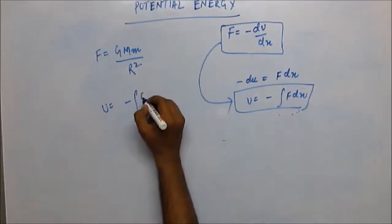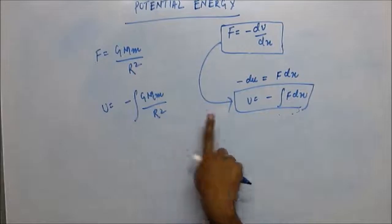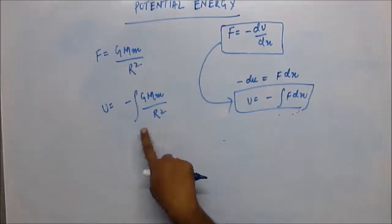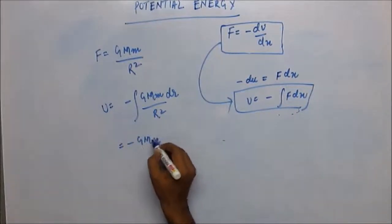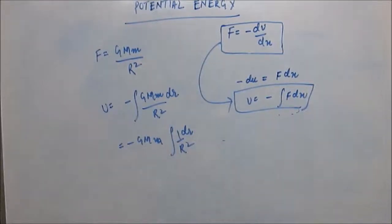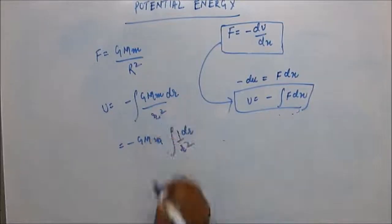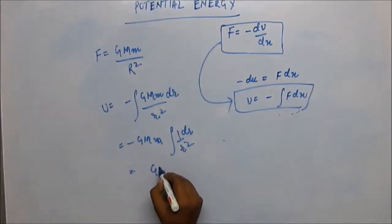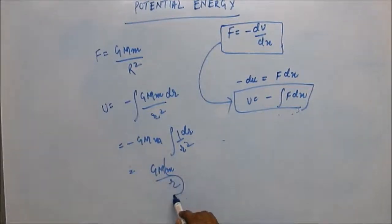The potential energy U equals negative integration of GMm/r². Using dr as the variable, GMm comes out of the integration, so we have to integrate 1/r². The integration of 1/r² is −1/r, so this comes out as GMm/r. This is the gravitational potential energy.